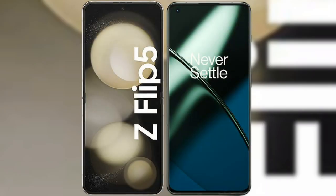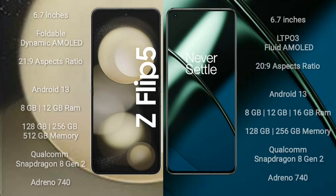I will compare the new Samsung Galaxy Z Flip 5 with OnePlus 11. Samsung Galaxy Z Flip 5 comes with a 6.7 inches foldable dynamic AMOLED display and aspect ratio 21x9. OnePlus 11 comes with a 6.7 inches LTPO 3 flat AMOLED display and aspect ratio 20x9.